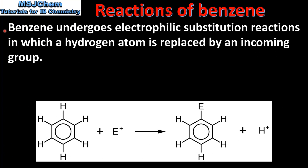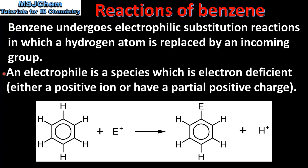Benzene undergoes electrophilic substitution reactions in which a hydrogen atom is replaced by an incoming group. An electrophile is a species which is electron deficient — it can either be a positive ion or have a partial positive charge. Here we can see the general reaction of benzene with an electrophile. The electrophile is attracted to the electron-rich benzene ring.